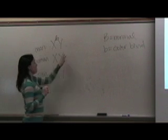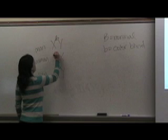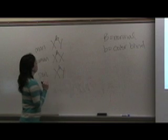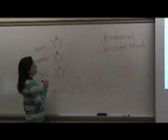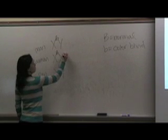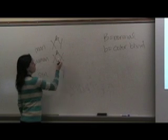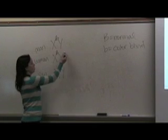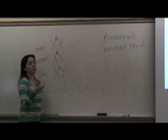Right? The dad has a big B, nothing on the Y. The woman has a big B as well. So, let's look at this. We need to figure out if this woman is, she could be homozygous dominant and have another big B, or she could be heterozygous and have a little b.